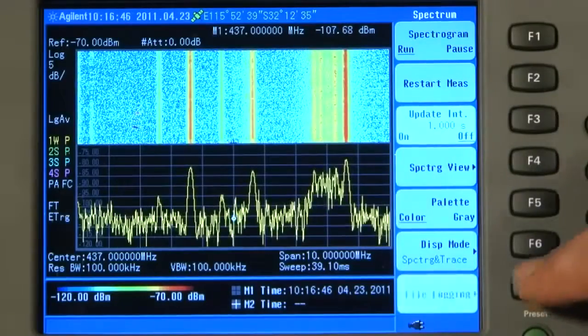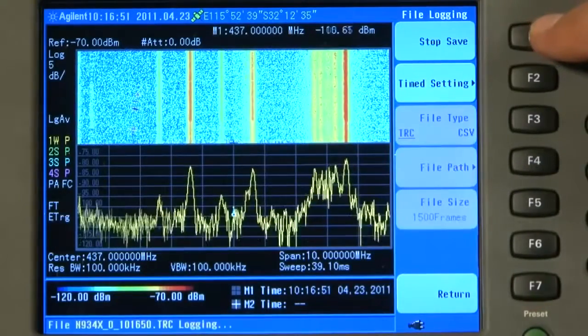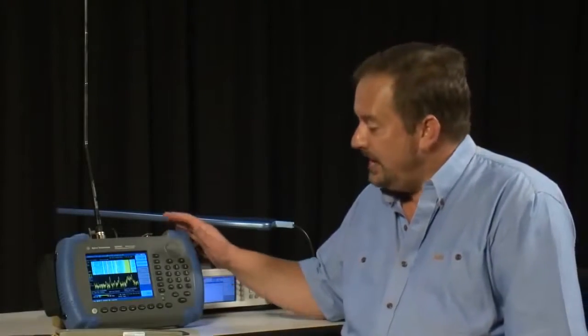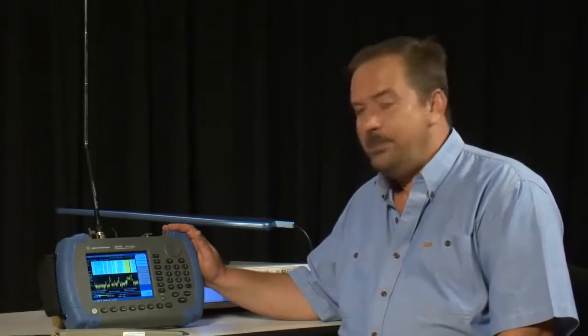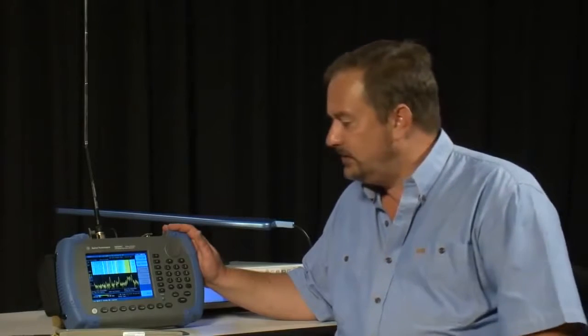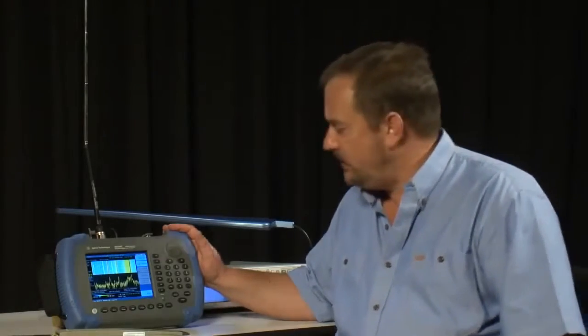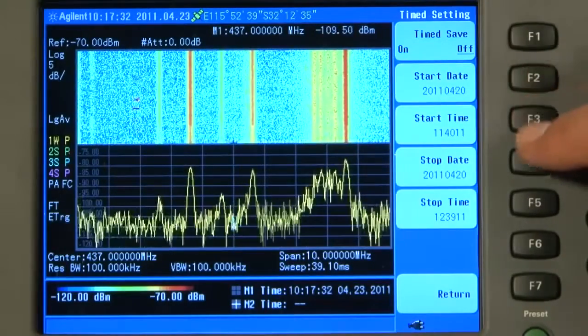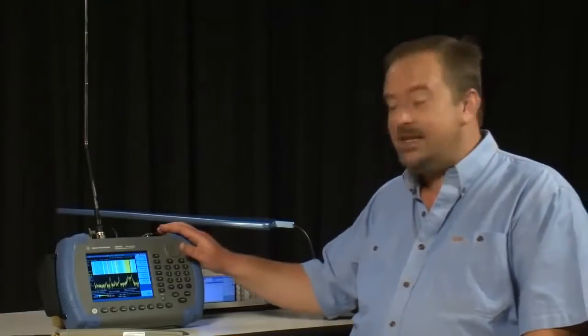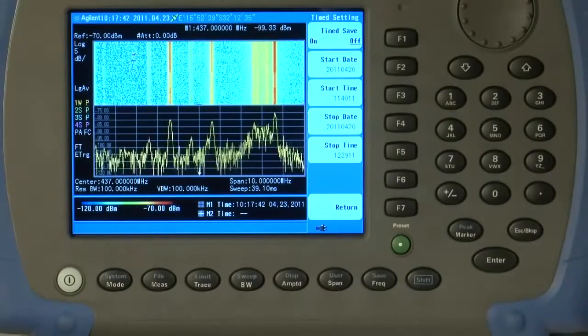Now here is probably the most useful feature of the spectrogram measurement, and that is File Logging. So if I press File Logging and I press Start Save, every trace now is being stored into the internal memory of the analyzer. And we are going to be able to play that back later and analyze what happened while we were away. In fact, for example, if you wanted to set the analyzer up to only record during the night, starting, say, at 10 o'clock at night and finishing at 2 a.m. in the morning, we can set the Time Setting here. Set Time Save On. You can enter the Start Date and Start Time, and Stop Date and Stop Time. And the analyzer will automatically start logging at a predefined time and stop at a predefined time. This is ideal for unattended logging, as it means we can leave the analyzer out on site, return a few days later, and then view what happened during that period.